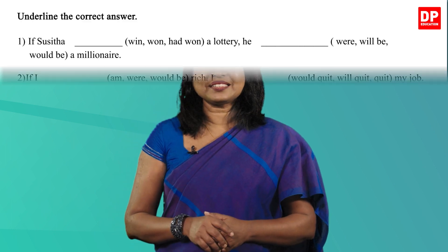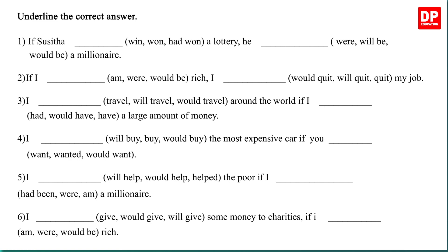Okay, let's check your answers. I will read the sentence with the underlined answers. First: If Susita won a lottery, he would be a millionaire. Second: If I were rich, I would quit my job. Third: I would travel around the world if I had a large amount of money. Fourth: I would buy the most expensive car if you wanted. Fifth: I would help the poor if I were a millionaire. Last one: I would give some money to charities if I were rich.